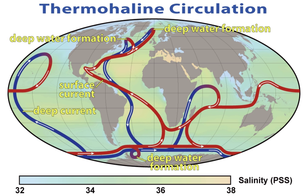Examples of sustained currents are the Gulf Stream and the Kuroshio current, which are wind-driven western boundary currents.